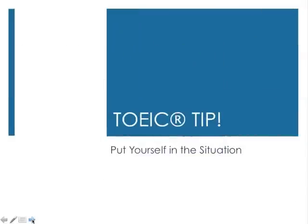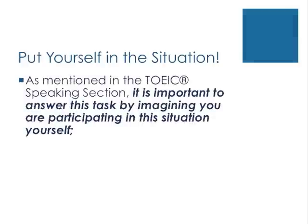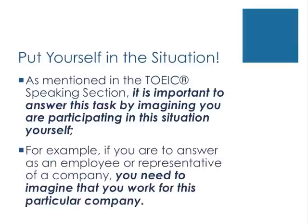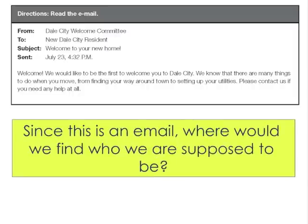This brings us to our first tip, which we also discussed in the speaking section: we have to imagine we are a participant. For example, if you were to answer as an employee or representative of a company, you have to imagine that you actually work for that company. So in our particular prompt, just who are we? Since this is an email, we would find that in the to line — that's us. In this case, we are a resident of Dale City.